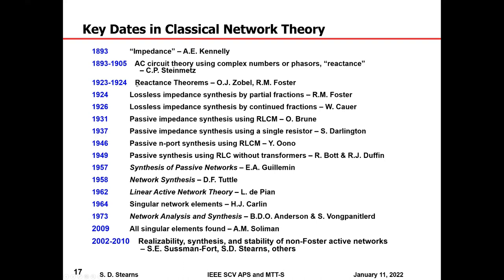This was followed by the reactance theorems of Otto Zobel and Ronald Martin Foster in 1923 and 1924 — the official starting point of classical network theory. Prior to that, electrical engineers worked on filters and AC theory; filter theory grew increasingly abstract and developed into network theory, concerning topological connections of elements and what impedance and transfer functions can be realized. The first synthesis procedure was Foster's method for lossless networks using partial fractions, followed quickly in Germany by Wilhelm Cauer, who showed you could use continued fractions to get ladder networks.